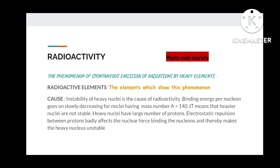Radioactivity is one of the phenomena which deals with the spontaneous emission of radiations by heavy elements. There are different types of radioactive elements that show this phenomena. Why do they show such behavior? There is a respective cause between this phenomena: that the heavy nuclei are unstable and due to the instability that becomes the cause for radioactivity.